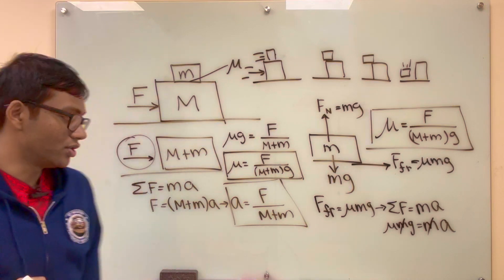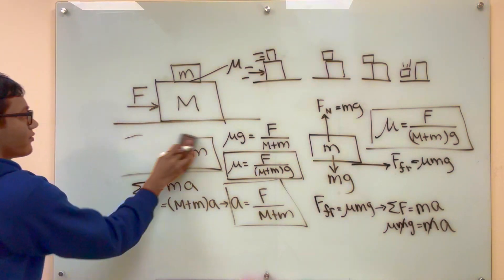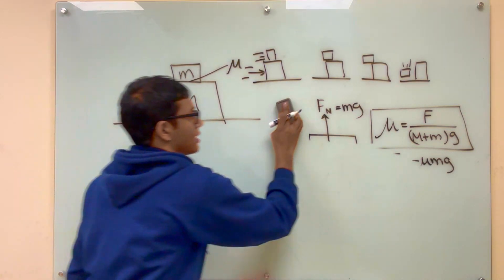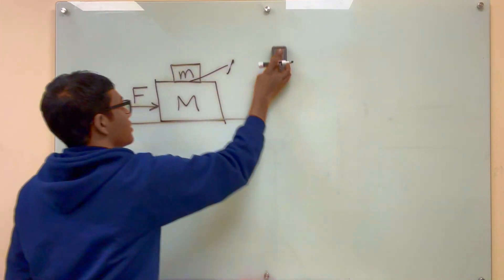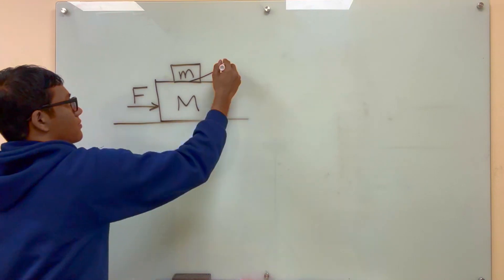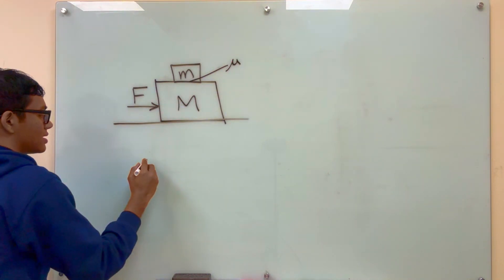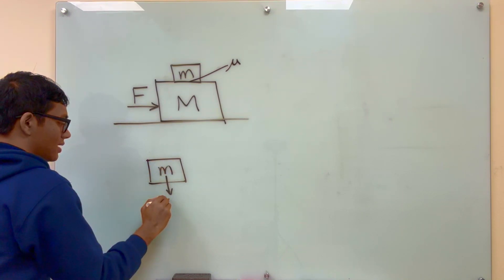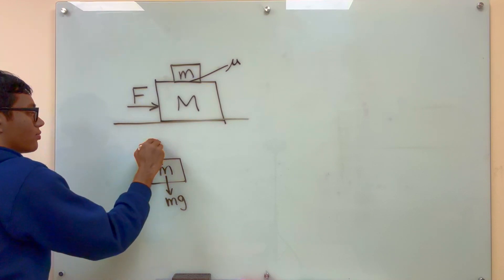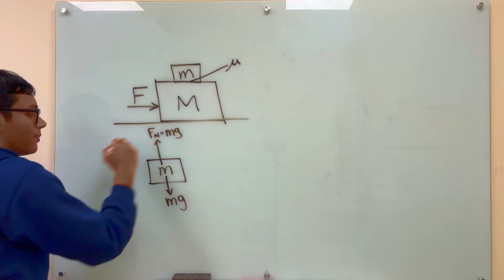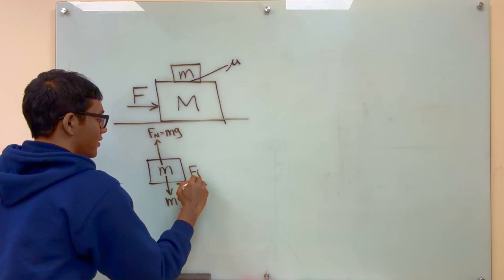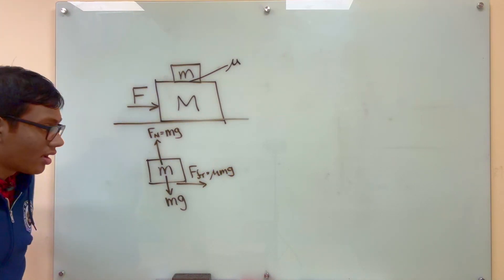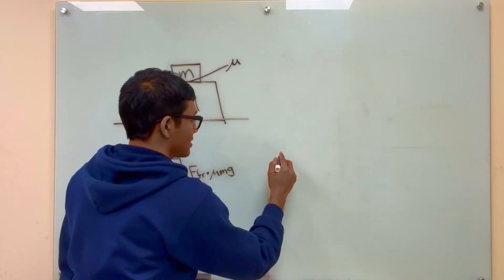Now let's take a look at method number two. We're going to draw the free body diagram for both of the boxes, not just the top one. Let's first draw the free body diagram for the top block since that's easier. The top block has mass m. It has gravity acting down on it, a normal force of equal magnitude acting up on it, and a force of friction carrying it forwards equal to mu mg. These are all the three forces acting on the top block.